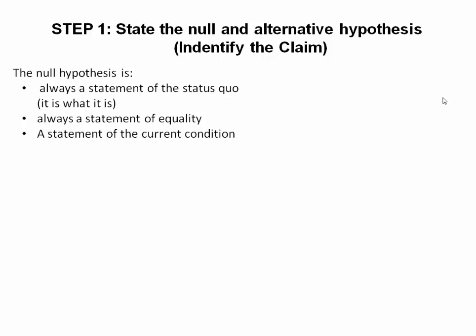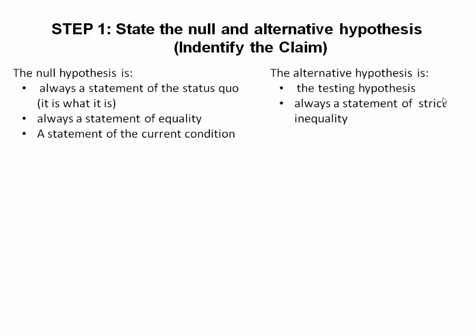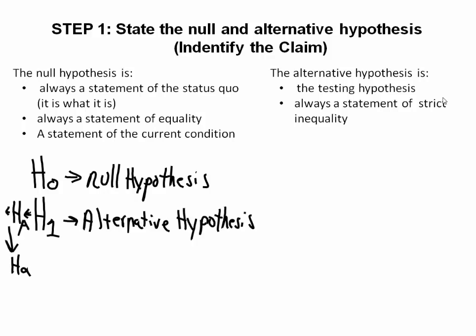The complement of the null hypothesis is the alternative hypothesis. The alternative hypothesis is our testing hypothesis, and it is always a statement of strict inequality. When we write our null hypothesis, we write it as H sub zero. When we write our alternative hypothesis, we write it as H sub one. In other textbooks, you may see the alternative hypothesis written as H sub capital A or H sub little a.